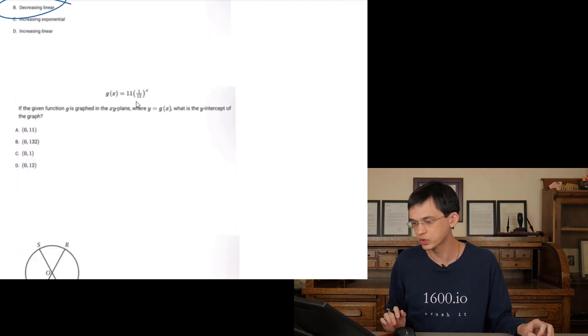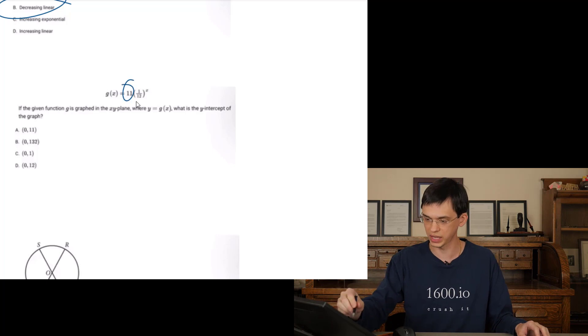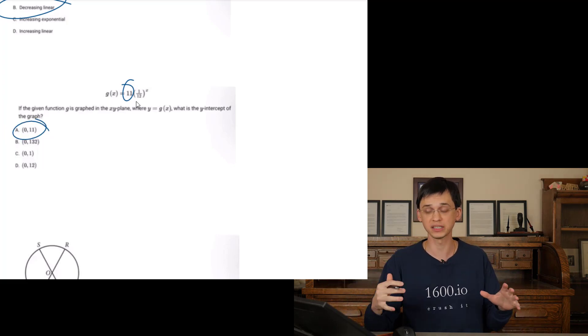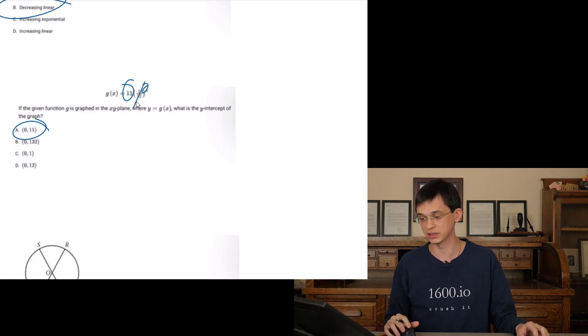Given function, exponential. What is the Y intercept? Y intercept is going to be 11. So the only answer here is going to be A. That is the Y intercept. But you could plug in X equals zero. Y intercept is the Y value when X equals zero. 112 to the zero power is 1. 1 times 11 is 11.